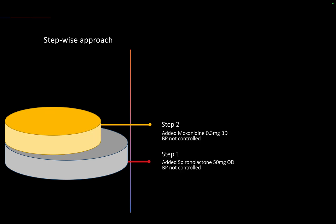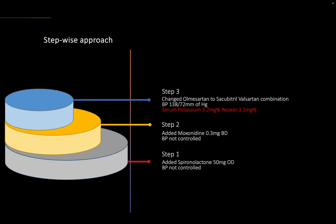In our stepwise approach, we started spironolactone 50 mg but BP remained uncontrolled. We added moxonidine — still uncontrolled. We then added sacubitril/valsartan 100 mg twice daily and the BP normalized. However, repeat potassium checks showed values of 3.2 and 3.1, despite the patient being on spironolactone and an ARB — a very important clue to hyperaldosteronism.